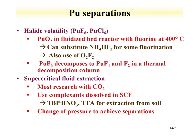Supercritical fluids have also been examined for the extraction of plutonium, mostly carbon dioxide. This supercritical fluid is evaluated with complexation using ligands such as tributyl phosphate or thenoyltrifluoroacetone, and has been studied for extracting plutonium from contaminated soil. The ligands bind the plutonium and pull it out of the soil, and when the supercritical fluid returns to normal atmospheric conditions, the fluid becomes a gas and what's left behind is plutonium with the ligands. This achieves separation and concentration of plutonium from soil using atmospheric conditions alone.